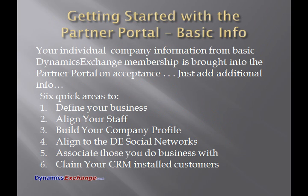Getting started with the Partner Portal — your basic information. Your individual company information from when you sign up on DE is brought into the Partner Portal once you are approved. We do screen each company for quality so we can eliminate spam. Here are six quick areas to fill out: define your business, align your staff, build your company profile, align to the DE social networks, associate those you do business with, and claim your CRM installed customers.